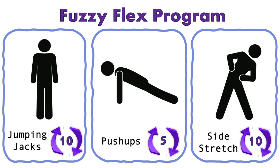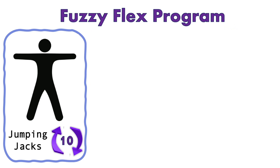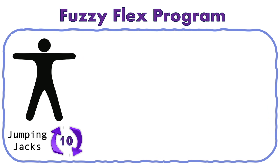This program was easy to follow, but think about how long and difficult the fuzzy flex program would have been to write and to follow if we couldn't use loops. For example, the instructions for ten jumping jacks would look like this.